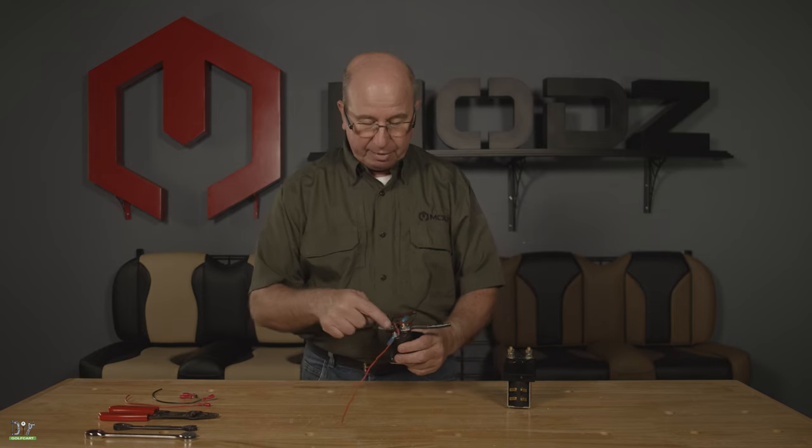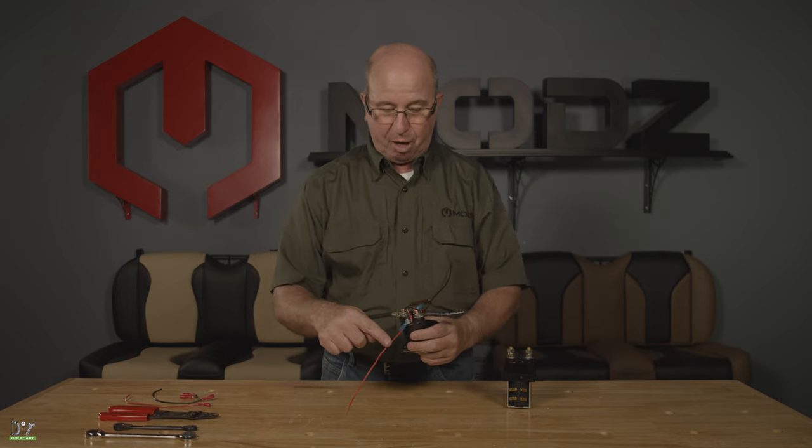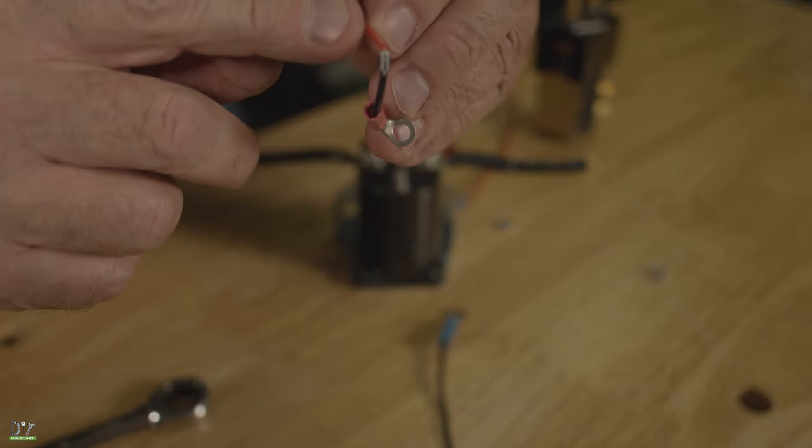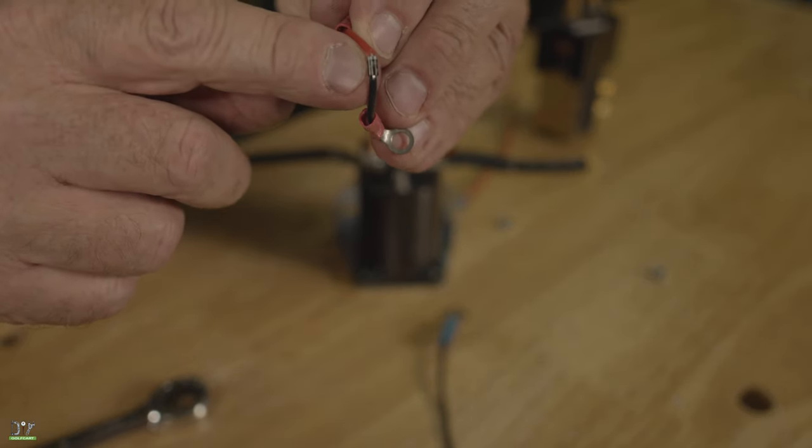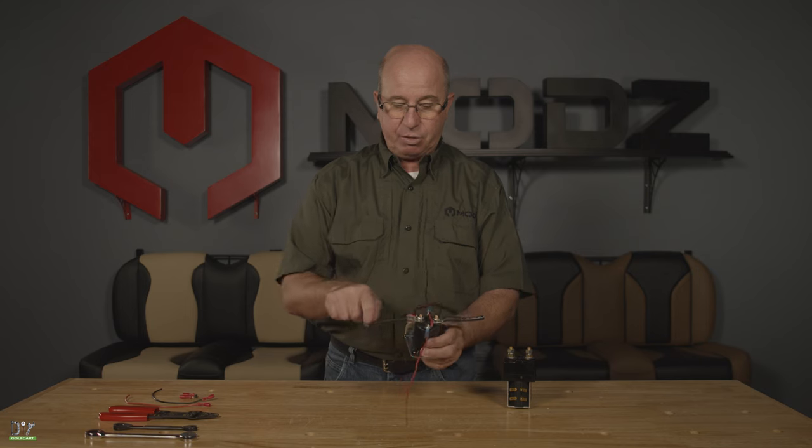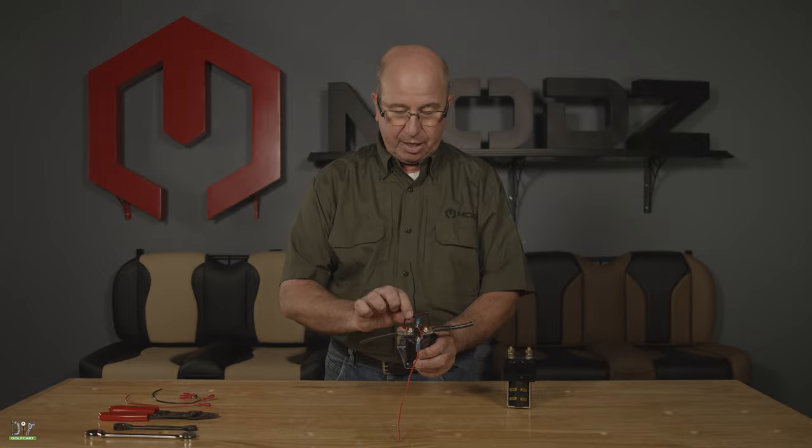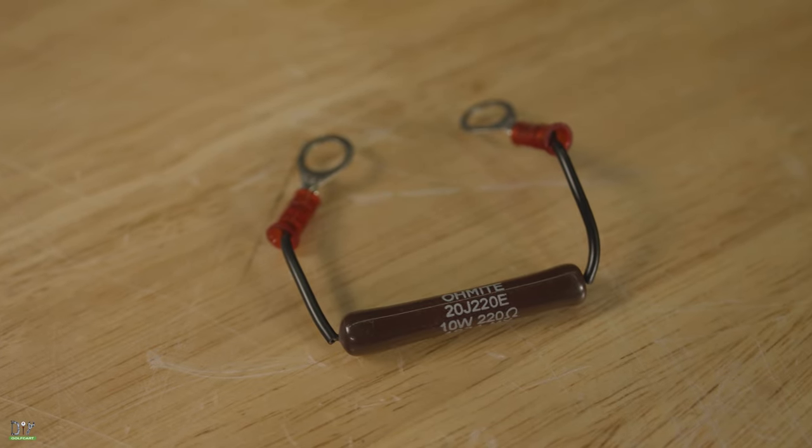Here's on your golf cart. We'll have a diode going from your small positive to your small negative. Got a little stripe here that always goes to the positive side. Our two larger cables, one's coming from the battery and one's going to your controller. There we'll have our resistor.